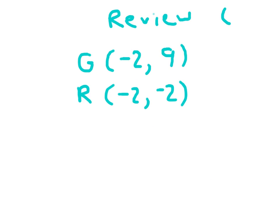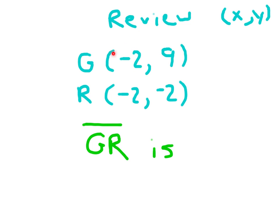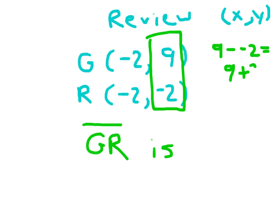Let's review. Coordinates go x then y. To figure out the lengths of vertical and horizontal line segments, you need to figure out which coordinates are the same for the points you're looking at. For line segment GR, the x-coordinates are the same, so we compare the y-coordinates. To compare them, we subtract: taking the larger one, which is 9, and subtracting negative 2. That's 9 minus negative 2, which equals 9 plus 2, which equals 11. When you subtract a negative number, you're actually adding. So line segment GR is 11 units long.